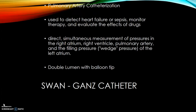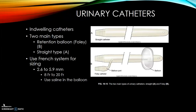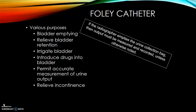The Swan-Ganz catheter is a pulmonary artery catheterization used to detect heart failure or sepsis, monitor therapy, and evaluate the effects of drugs. It provides direct simultaneous measurement of pressures in the right atrium, right ventricle, pulmonary artery, and the filling pressure of the left atrium. It is typically a double lumen with a balloon tip. Urinary catheters are indwelling catheters with two main types: a retention balloon type and the straight type, sized using the French system. The Foley catheter is used primarily for bladder emptying, to relieve bladder retention, irrigate the bladder, introduce drugs into the bladder, permit accurate measurement of urine output, and relieve incontinence. If the radiographer empties the urine collection bag, output must be measured and recorded unless otherwise noted.